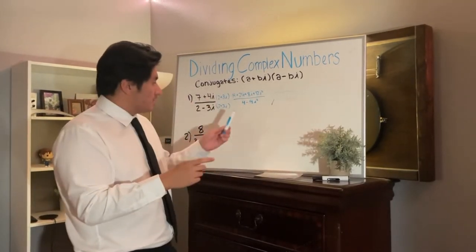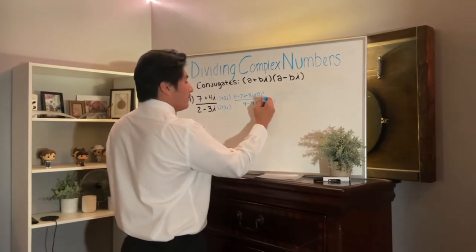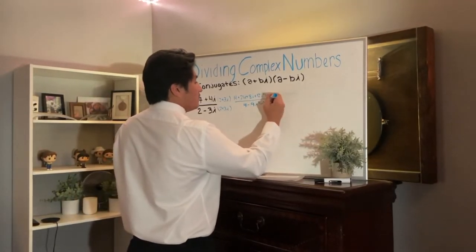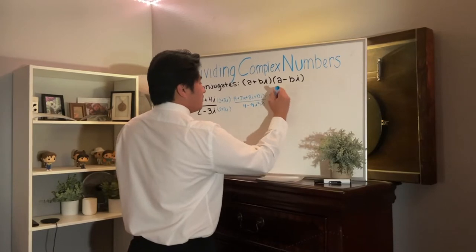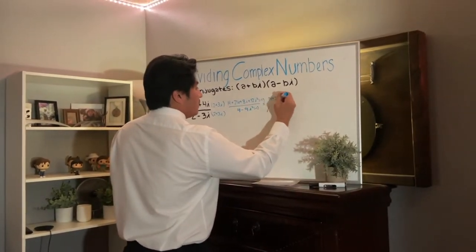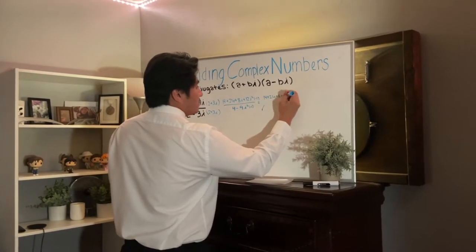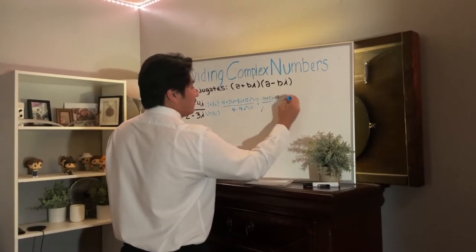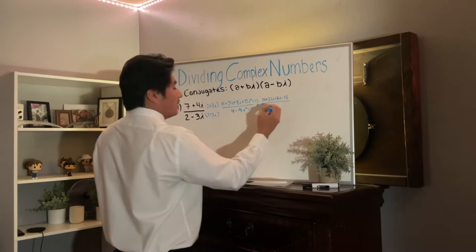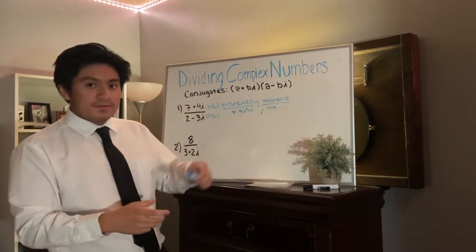So we're going to multiply by negative one in both places and rewrite that. That's going to be 14 plus 21i plus 8i minus 12, all over 4 plus 9. Then we're going to combine all the like terms to simplify.